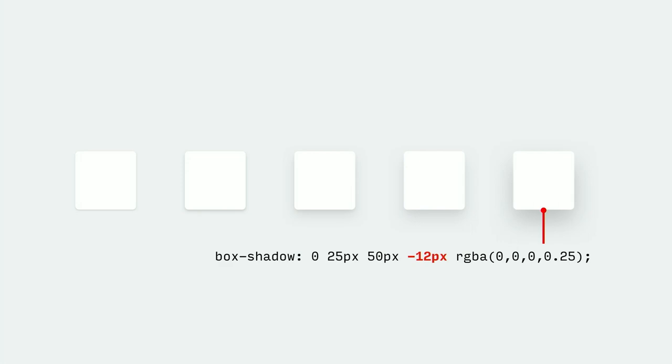Furthermore, as an object gets further away, it slowly covers the direct light source — consider that by introducing a negative spread value. If you're going to use this two-shadow technique on your own projects, make sure you make the direct light shadow more subtle for shadows that represent a higher elevation. This just gives you a little bit more creative control compared to working with a single shadow.